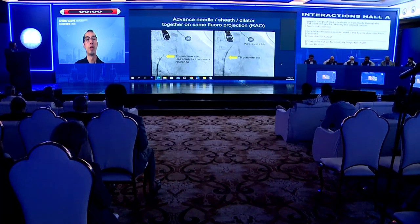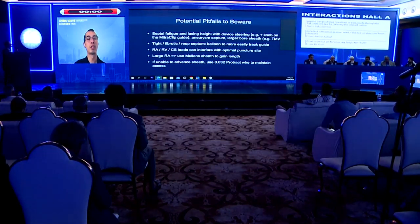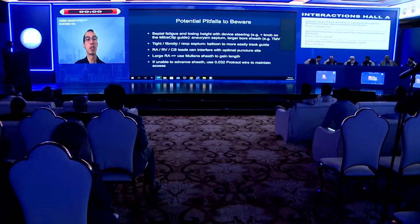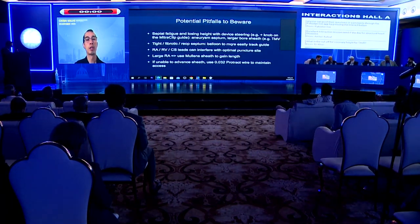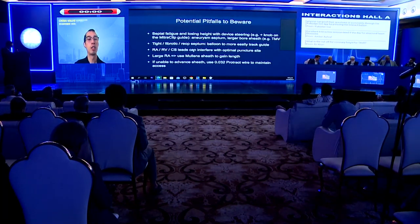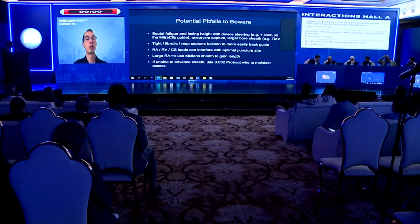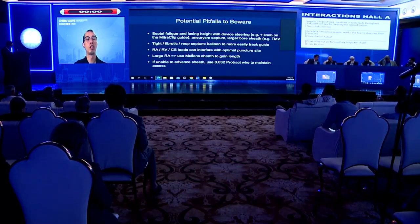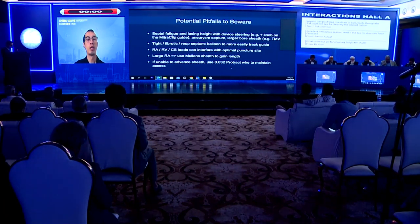Key troubleshooting considerations include septal fatigue and loss of height. For a fibrotic or tight septum, balloon dilation may be needed to advance the guide. Pacemaker or defibrillator leads can interfere with the optimal puncture site. In patients with a very large right atrium, a Mullins sheath provides added length. If the sheath cannot be advanced, a 0.032-inch ProTrack wire can be used to maintain access.